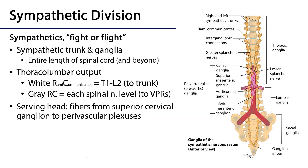The sympathetic division of the autonomic nervous system is referred to as fight or flight — all of the responses that get you ready to fight or flee for your life. It's organized by two sympathetic trunks consisting of ganglia held together by fibers running the entire length of the vertebral column and beyond, from the superior cervical ganglion adjacent to the base of the skull all the way down to the ganglion impar of the coccyx.